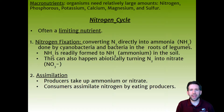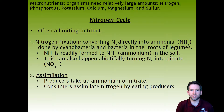Nitrogen is the primary gas we breathe in and interact with daily. Step one is nitrogen fixation: converting atmospheric N2 directly into ammonia (NH3), done by bacteria in the roots of legumes such as chickpeas or peanuts. NH3, or ammonia, is readily formed into ammonium (NH4+) in the soil. This can also happen abiotically, converting N2 into nitrate (NO3-).